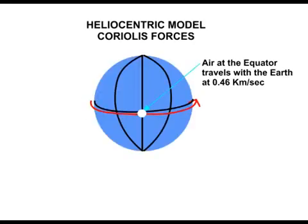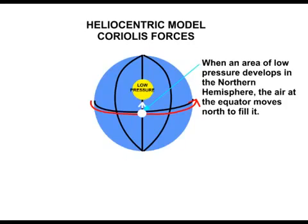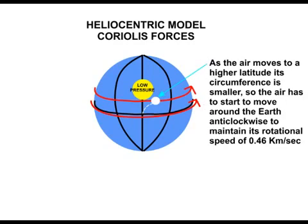In the heliocentric model the earth is rotating once per day in an anti-clockwise direction and the earth's atmosphere rotates with it. Air at the equator travels with the earth at 0.46 km per second. When an area of low pressure develops in the northern hemisphere the air at the equator moves north to fill it. As the air moves to a higher latitude its circumference is smaller so the air has to start to move around the earth anti-clockwise to maintain its rotational speed of 0.46 km per second.